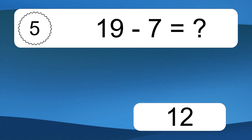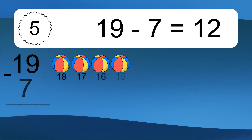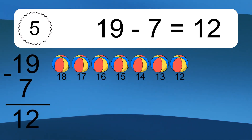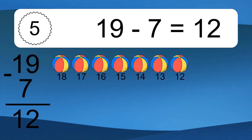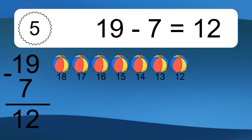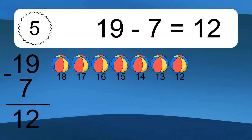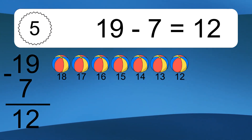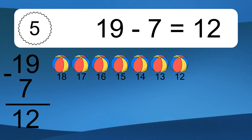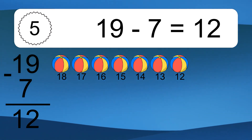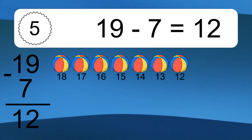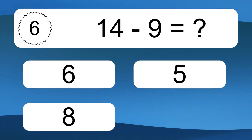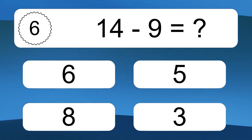19 minus 7 equals what? 19 minus 7 equals 12. Let's count it: 18, 17, 16, 15, 14, 13, 12. 14 minus 9 equals what?